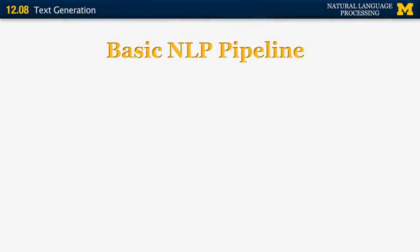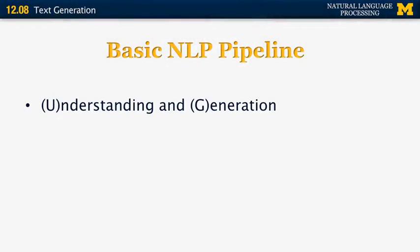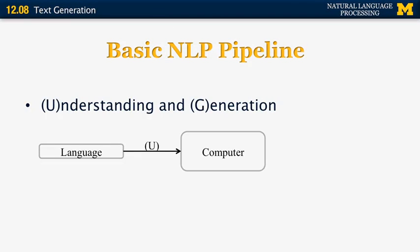In this segment, we're going to very briefly talk about the second portion of the natural language understanding pipeline, specifically text generation. Let me remind you what an NLP pipeline looks like. We have understanding and generation. We start from a language, like a sentence. Understanding takes us to some computer representation that the computer can understand. And then if the computer wants to respond to the human, it would have to go through a generation component and produce language back.